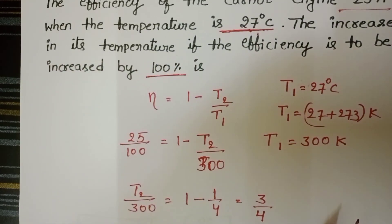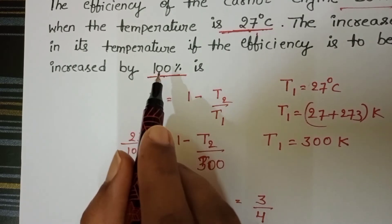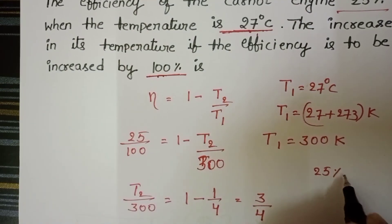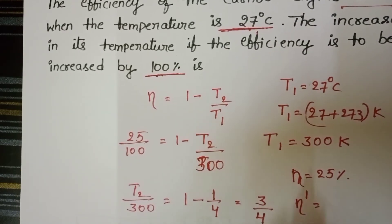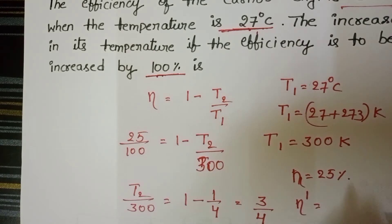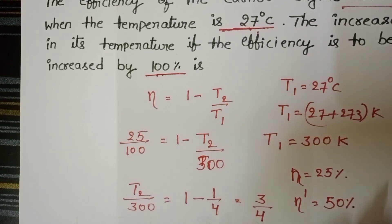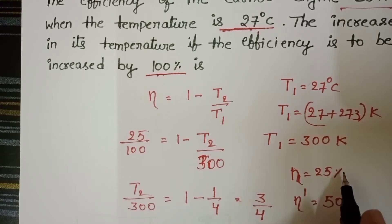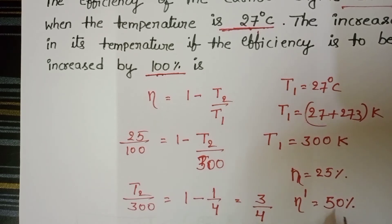Now efficiency is to be increased by 100%. Initial efficiency is 25%, and 100% increase means 25 plus 25, so 50%. In the second case, efficiency is 50%. You don't take 100% here. 100% increase means 25% becomes double, 50%.